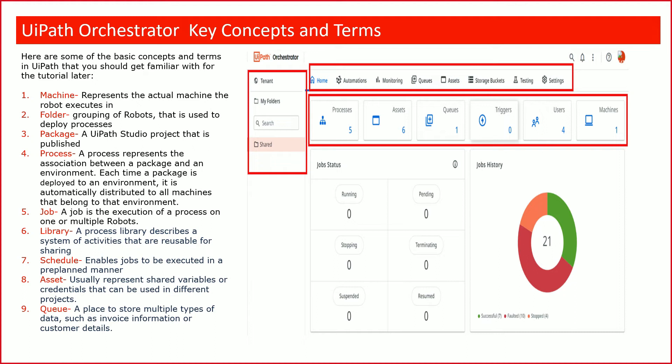As I mentioned, a job can be triggered manually from the UiPath Orchestrator or UiPath Assistant, or it can be scheduled. For scheduling, we can run a bot in a pre-planned manner — for example, run this job every Saturday at 7 PM India time. That concept is called Schedule.